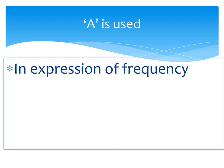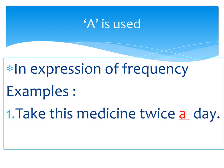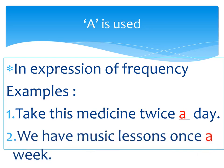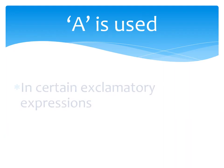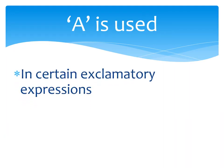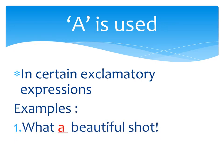Seventh use: in expressions of frequency. For example, 'take this medicine twice a day.' Frequency means how often the work is being done. Twice means two times, once means one time, thrice means three times. For example, 'we have music lessons once a week.' Eighth use: in certain exclamatory expressions — for example, 'what a beautiful shot' and 'what a pity.'